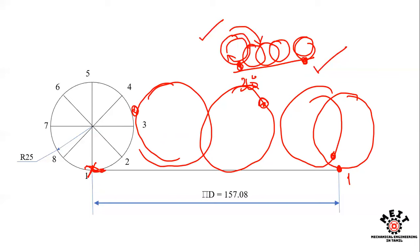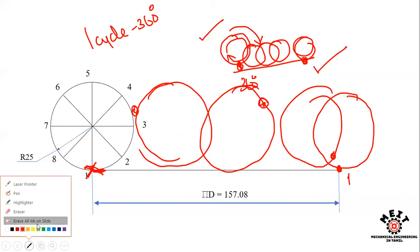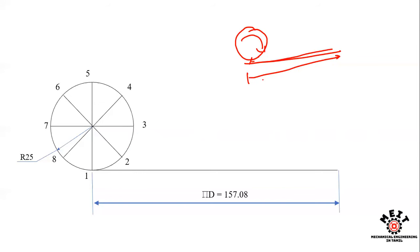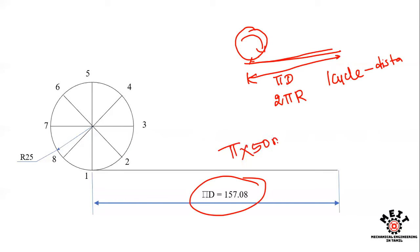When the circle completes one full rotation, the distance traveled along the flat surface equals the circumference: 2πR, which is πD. With D = 50mm, the distance is π × 50 = 157.08mm. So we draw a flat baseline of length 157.08mm.